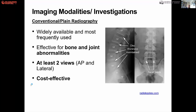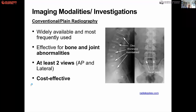Radiography is widely available and most frequently used. A lateral picture of a lumbar spine shows you disc thickness — in this case it is maintained. It is still the most cost-effective radiological investigation. If you know how to read radiographs properly and take a good history with clinical examination, you in fact do not require a CT or an MRI.